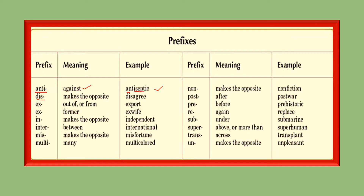A very common prefix is 'dis', which makes the opposite — 'agree' becomes 'disagree'. 'Ex' means 'out of' or 'from', like 'export' or 'ex-wife'. 'In' again makes an opposite — 'dependent' becomes 'independent'. 'Inter' means 'between' — 'national' becomes 'international'. 'Mis' is used to make the opposite — 'fortune' becomes 'misfortune'. 'Multi' means 'many' — 'colored' becomes 'multicolored'.